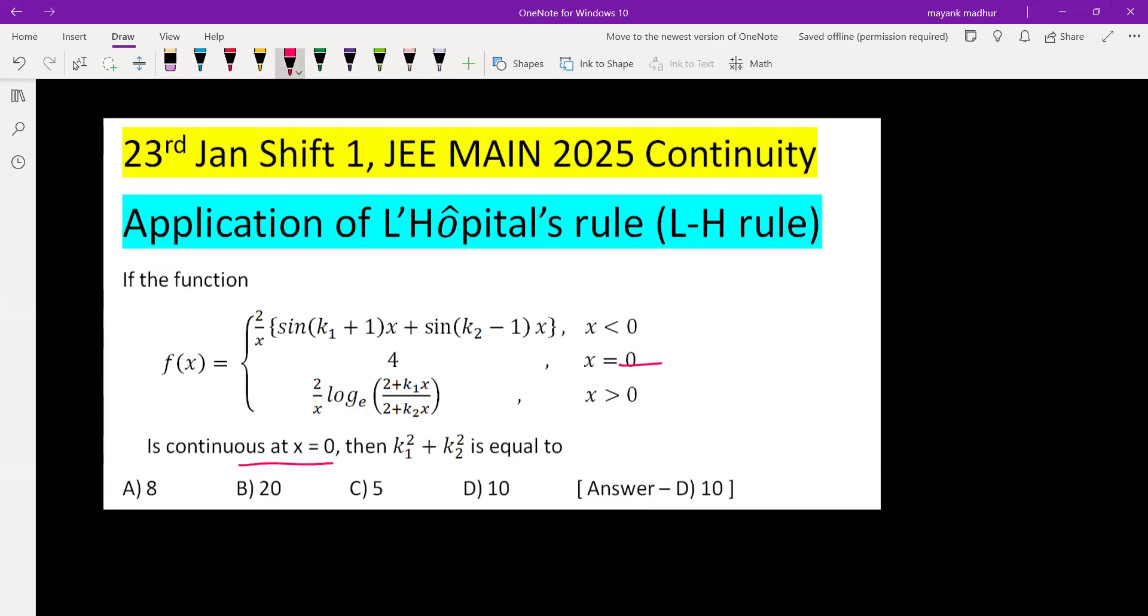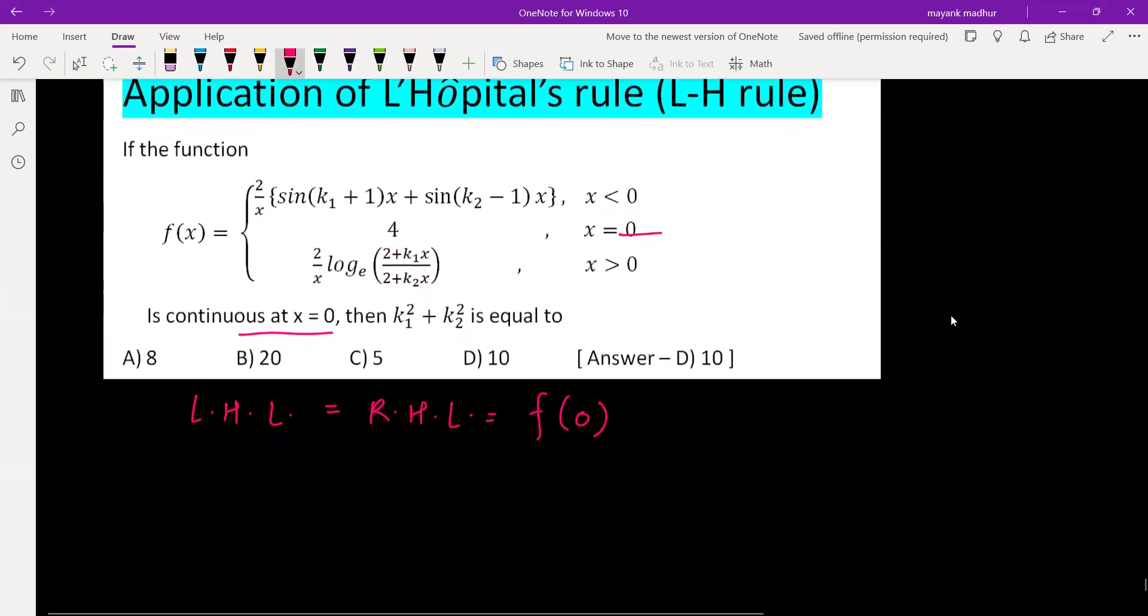This function is continuous at x = 0, that means LHL, RHL, and the value of the function at x = 0 must be the same. For any function to be continuous, these three should be the same.